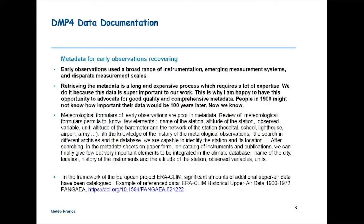It's very important to identify the station and it's not easy because we have a very rich heritage and several stations in the same city from previously. After searching in the metadata sheets on paper form, catalogs of instruments, and publications, we can finally give a few but very important elements to integrate into the climate database: name of the city, location, history of the instrument, history of the altitude of the station, history of the altitude of the barometer, observed variables and units. We try to provide this kind of metadata for all the early data we recover.